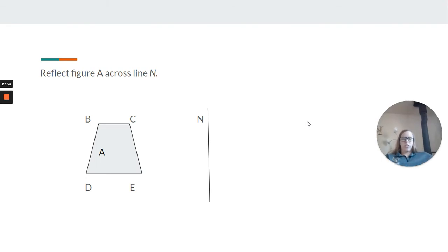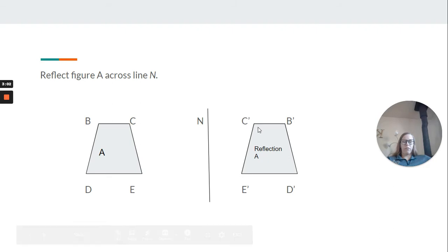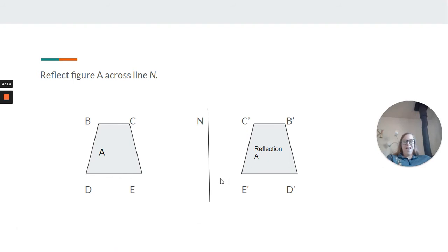Now what about reflection? That was the second part. It says reflect figure A across line N. Easy enough. Remember that it's basically like if we folded it in half. It actually should be just a little bit to the right. But if we folded it in half, they would basically just lay over each other. So we have C and C on the inside. E and E.